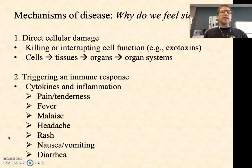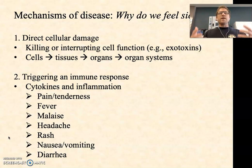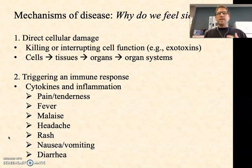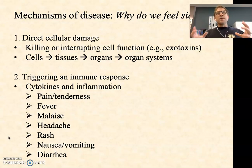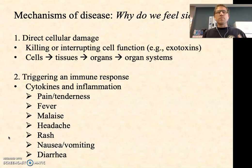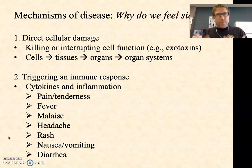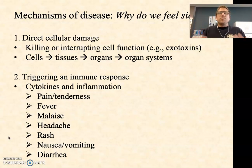There's also the immune response. A lot of what we feel with an infection — whether it's bacterial, viral, or otherwise — is due to your immune system attempting to protect you. There are a variety of chemicals that we collectively call cytokines, which are involved in coordinating and communicating the overall immune response. And those cytokines, we have good evidence, make us feel really crummy.